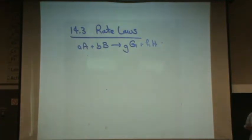So aA + bB goes to gG + hH, where the lowercase letters are the coefficients.